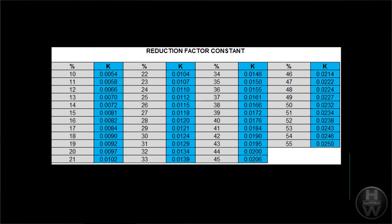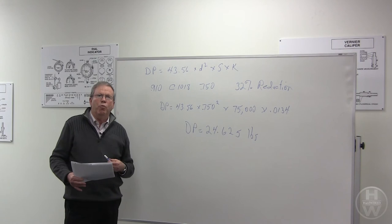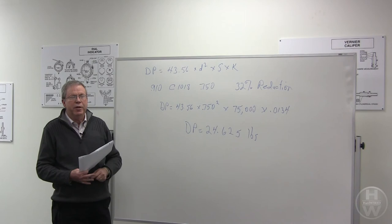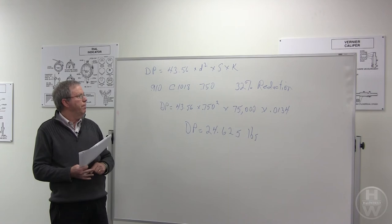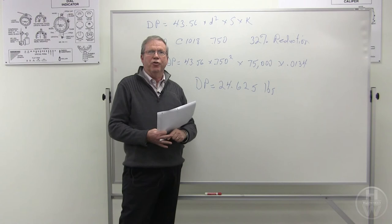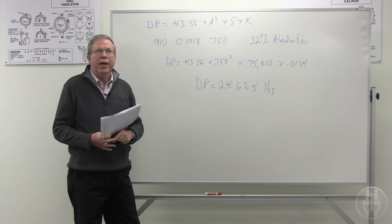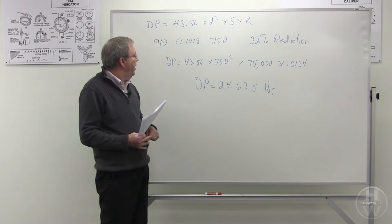So let's say someone comes up and says, can I draw a 910 rod down to 750 wire size from 1018 material? So we will work the equation out and determine if we can do that. 910 down to 750 is a 32% reduction in area. We know that a C1018 material has about 75,000 PSI starting tensile.